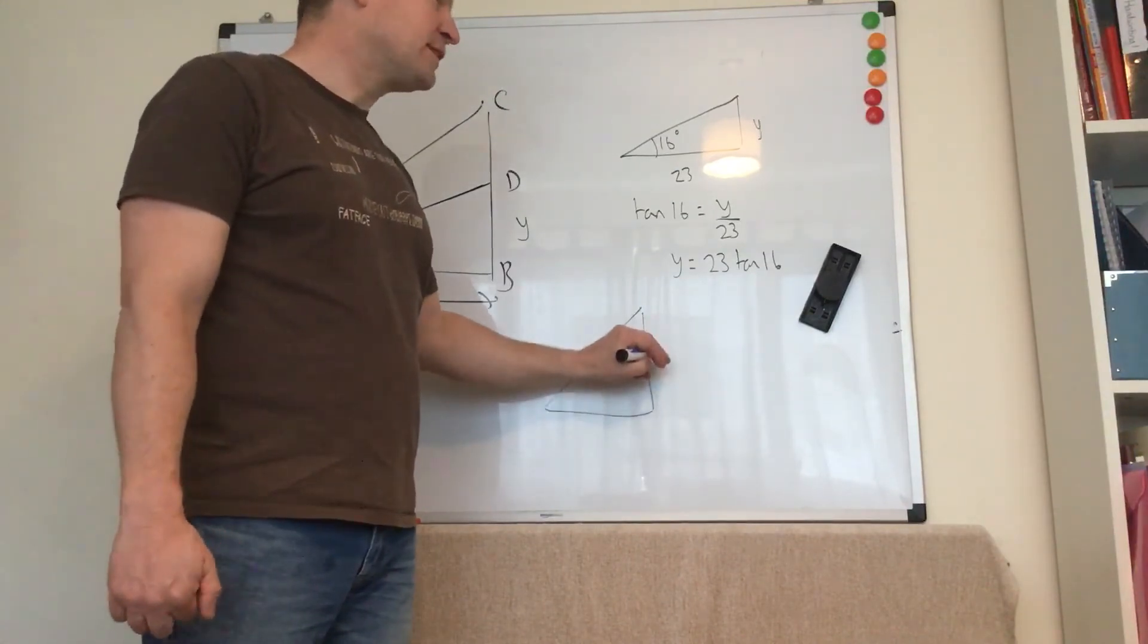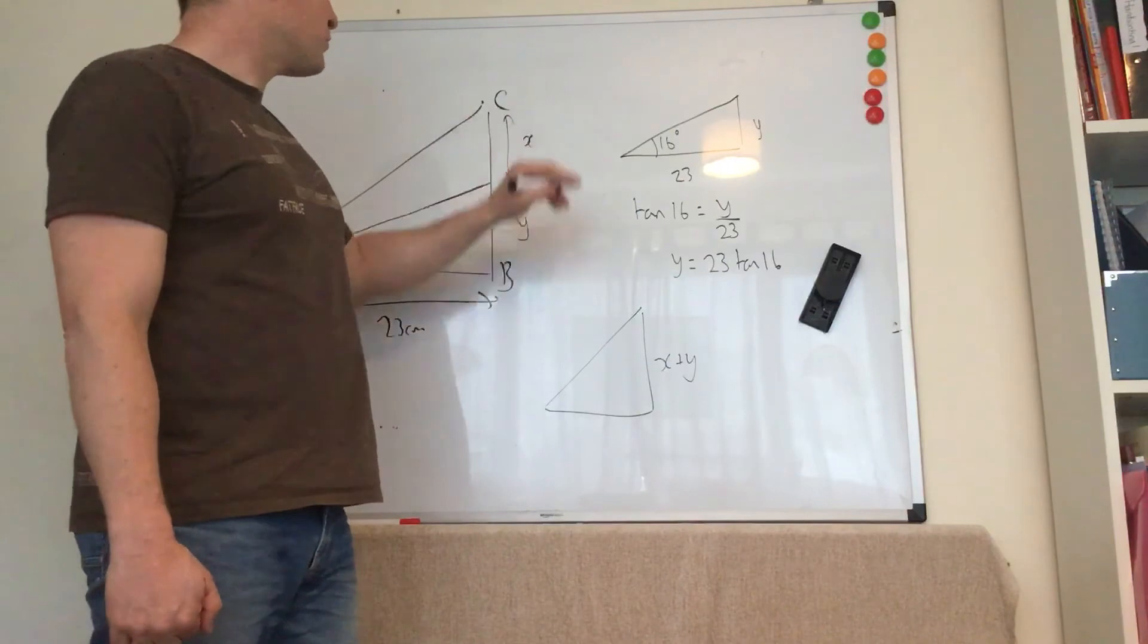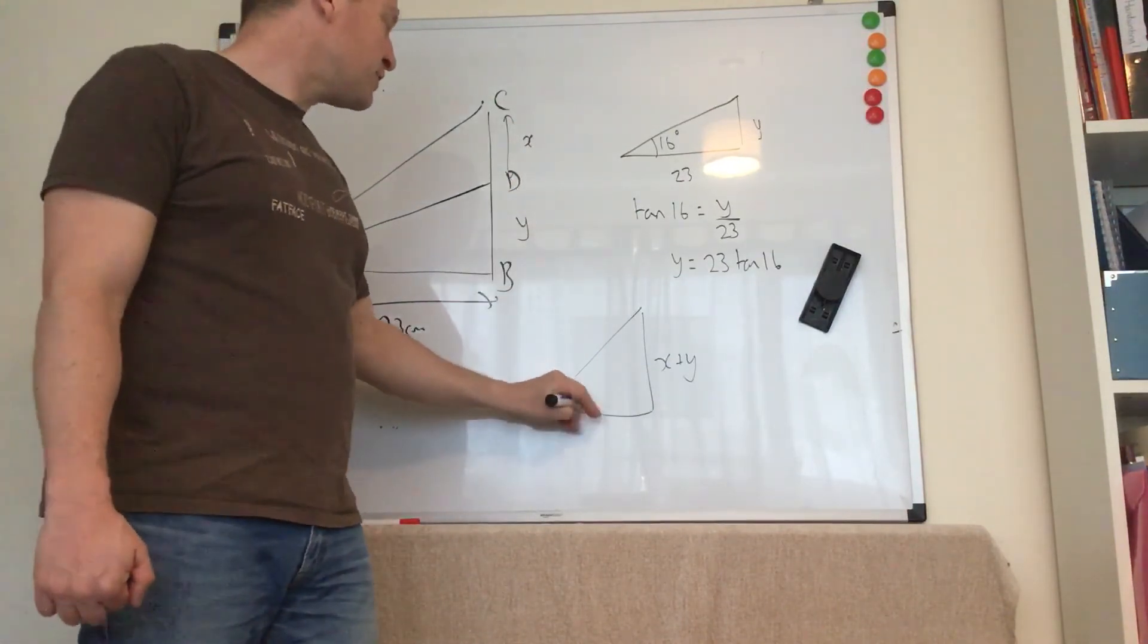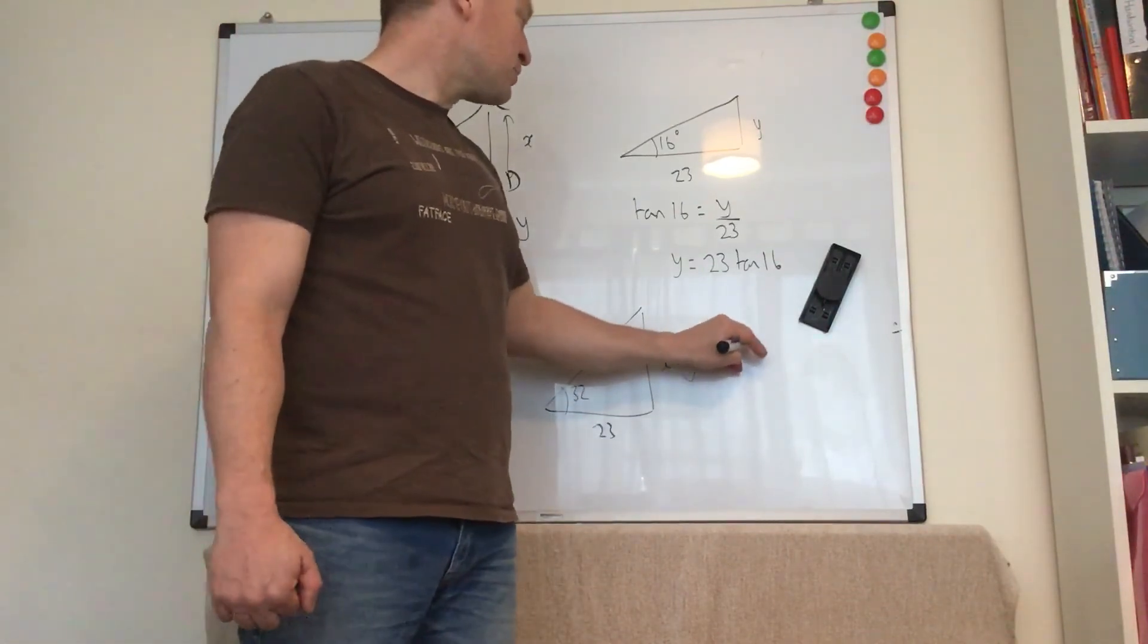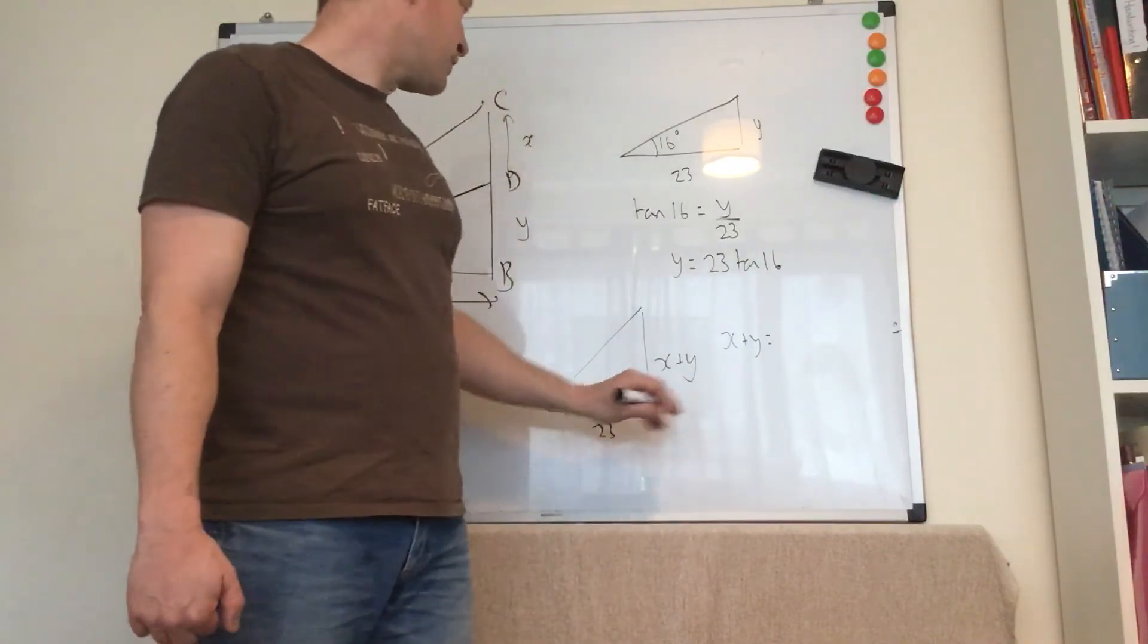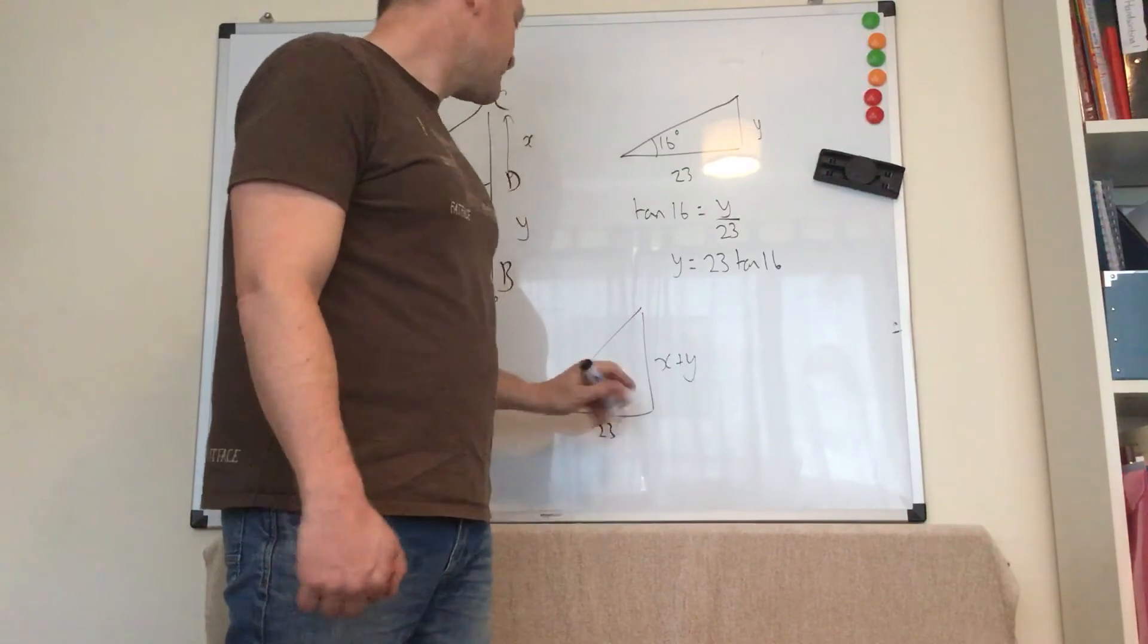If I draw the big triangle, this side now is x plus y, because this was x that we needed to find. So x plus y is the whole thing. That's 32, that's still 23. So we get x plus y is equal to... I'll start at the beginning. Tan 32...